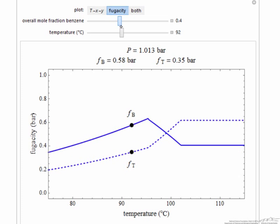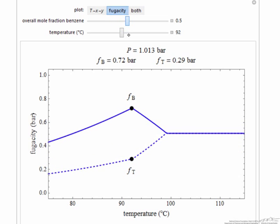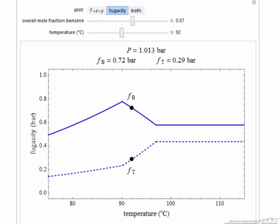But in all cases, the fugacity of B increases at the lower temperature when it is a liquid. In the two-phase region, the fugacity of B decreases, and the fugacity of T, toluene, increases in this two-phase region as we raise the temperature.